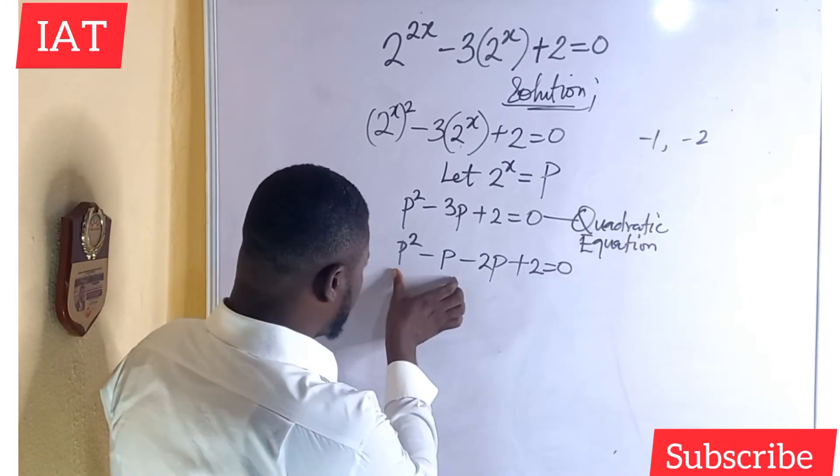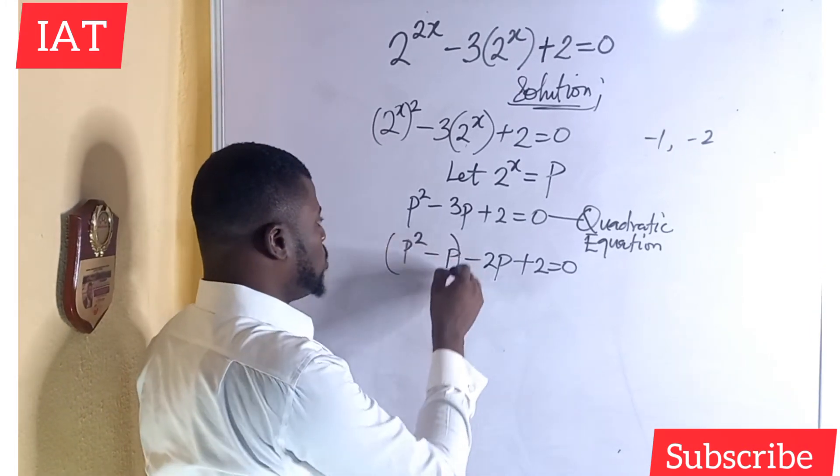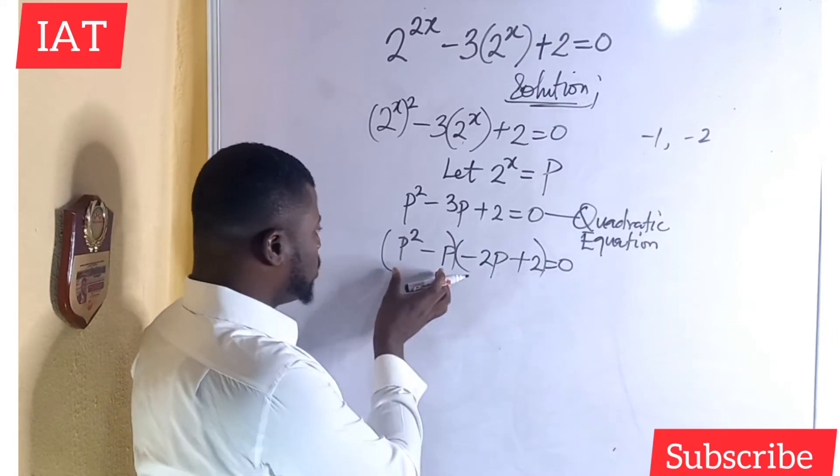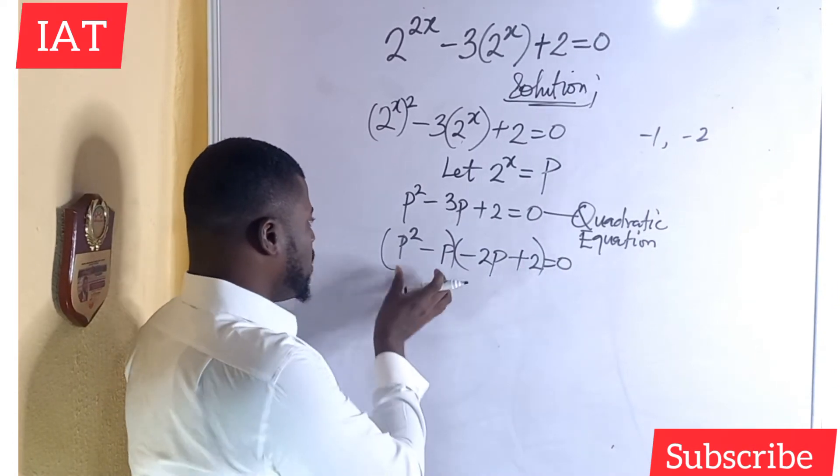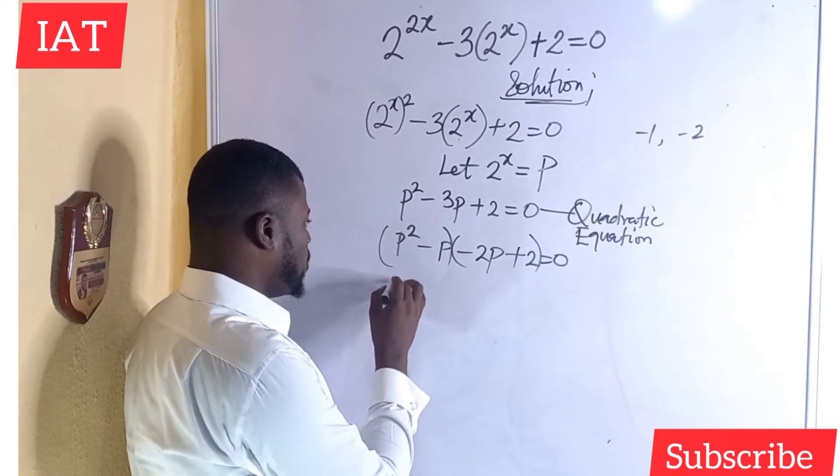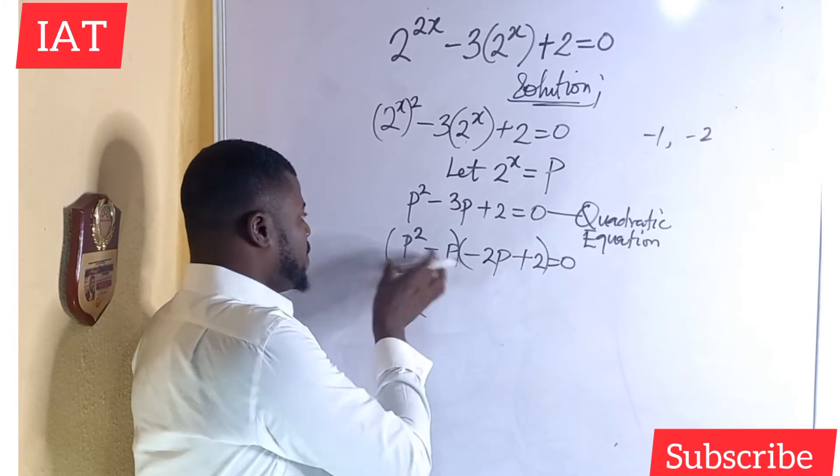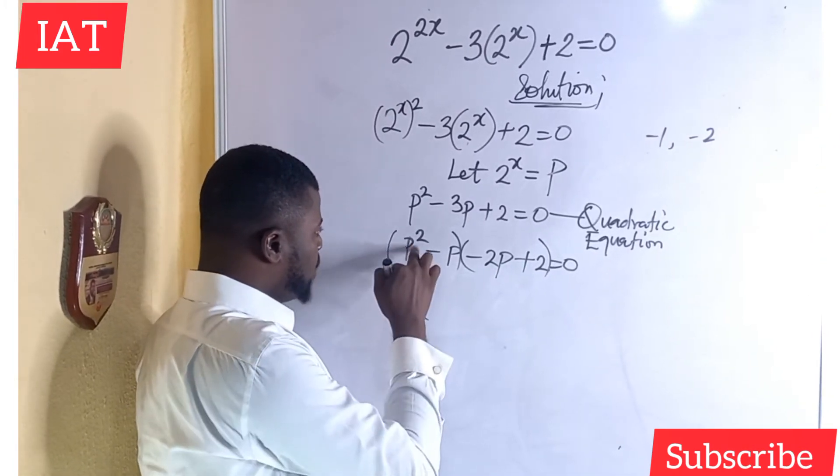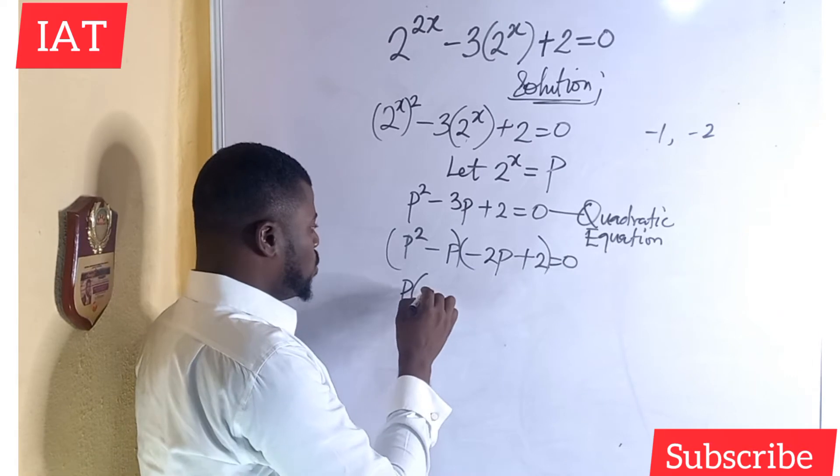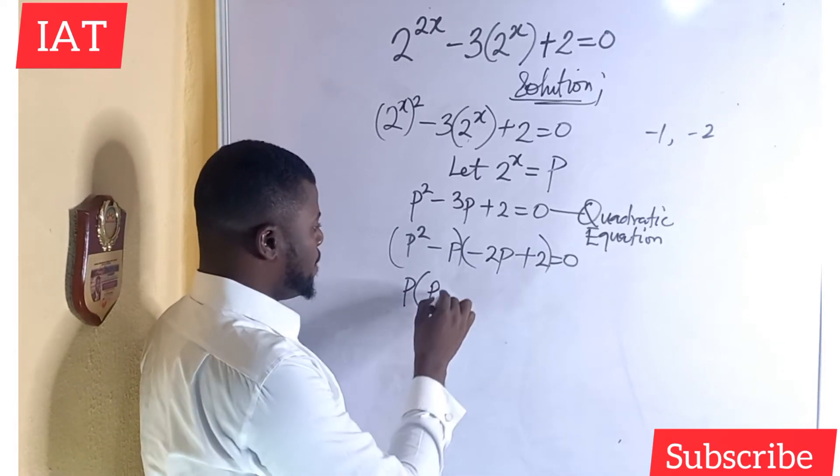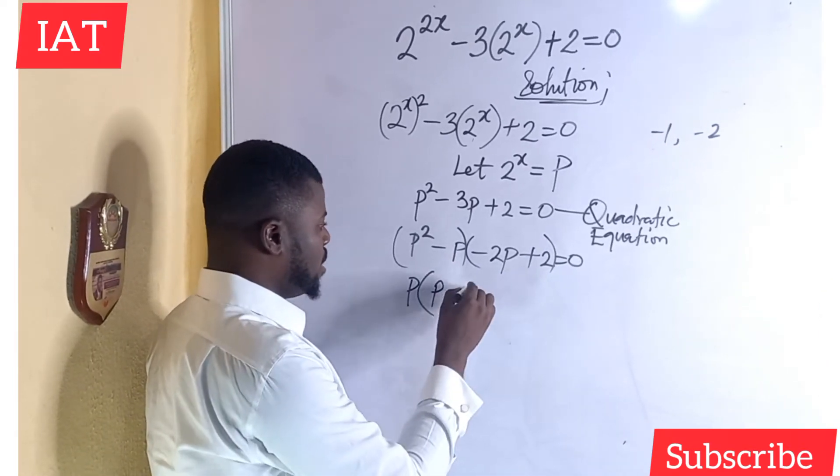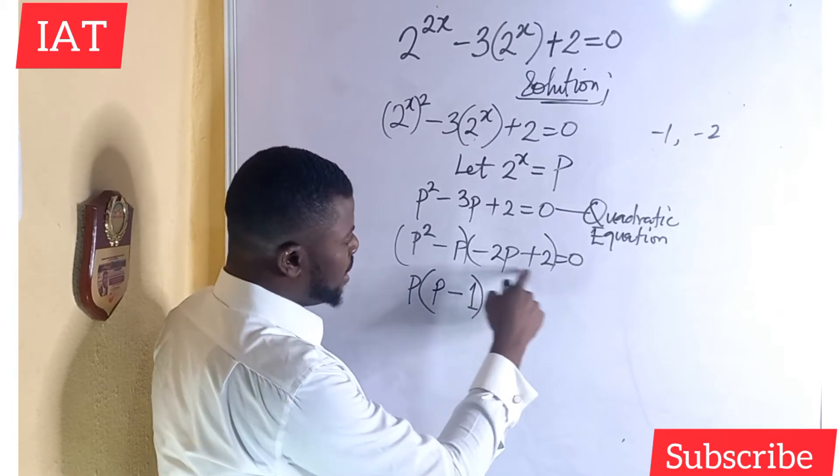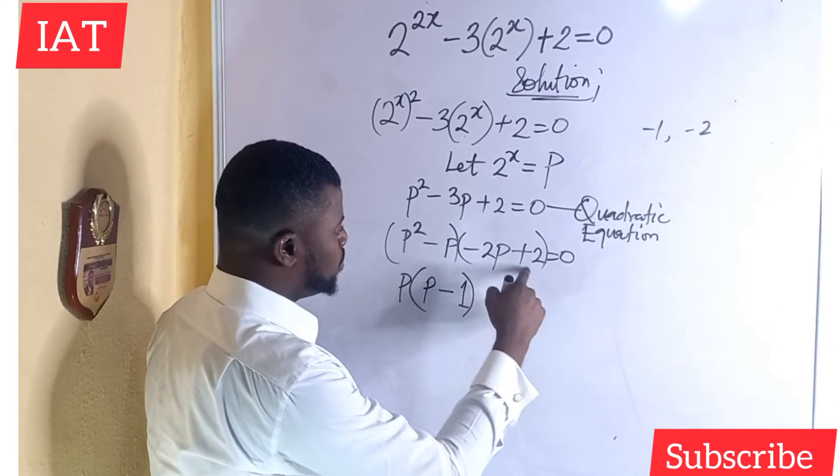So at this point, what do I need to do? I have to group this. And if I group these two, I will also group these two. What is common here? p is common. p is common to both sides, so I will bring out p. If I factor out p, p squared divided by p, what we remain here will be p. Minus p divided by p, that is 1.